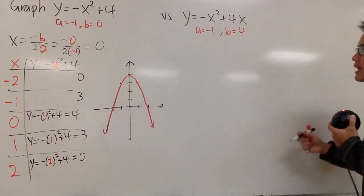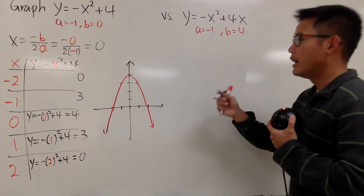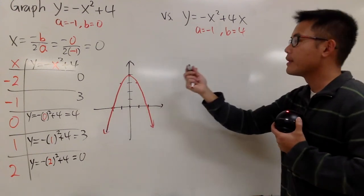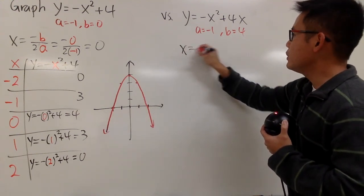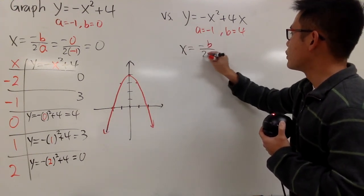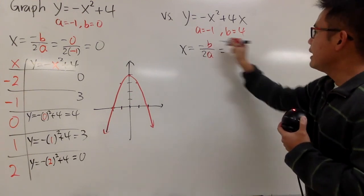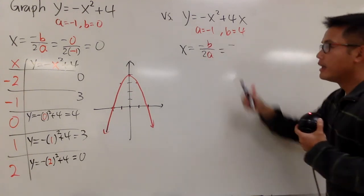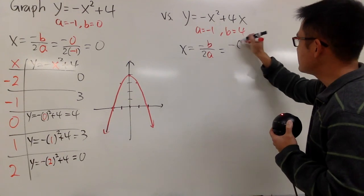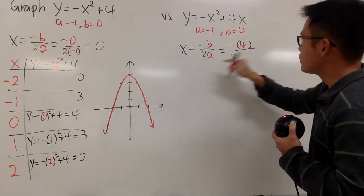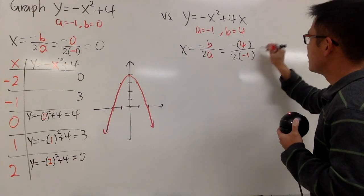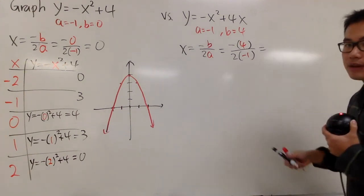And now, in this case, b is actually equal to 4. And we still use the same formula. Let's write it down. x is equal to negative b over 2a. Negative is the negative from the formula. And the b is 4 in our case. And then over 2 times a, which is this negative 1.